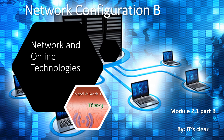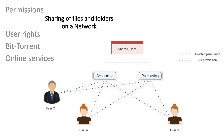Hi from IIT's CLEA. Today we continue with module 2.1 part B. This is still on network configuration and we're looking at different technologies that go with networks and the internet. We'll look at the sharing of files and folders on a network, permissions, user rights, what BitTorrent is, and also online services.